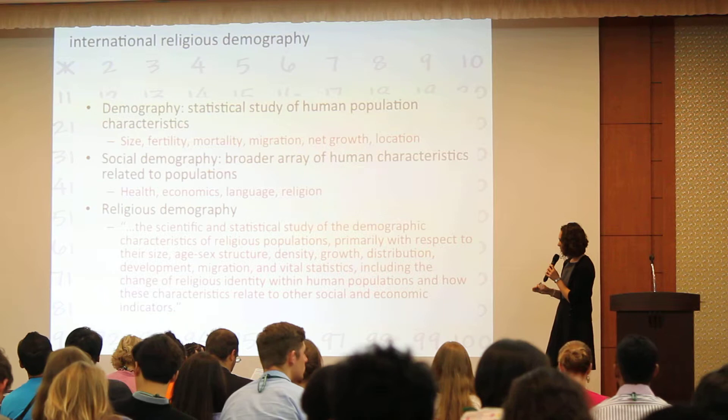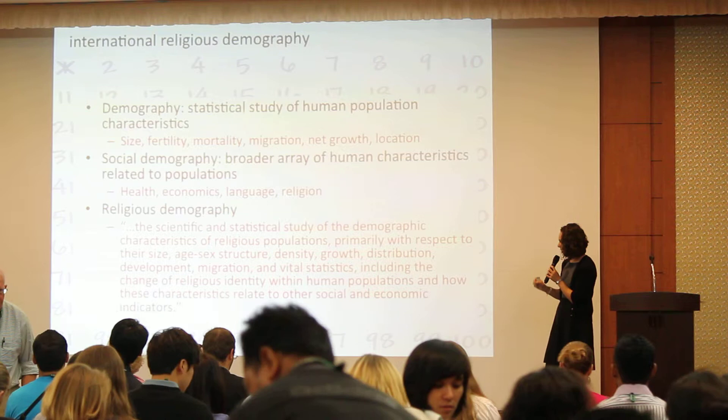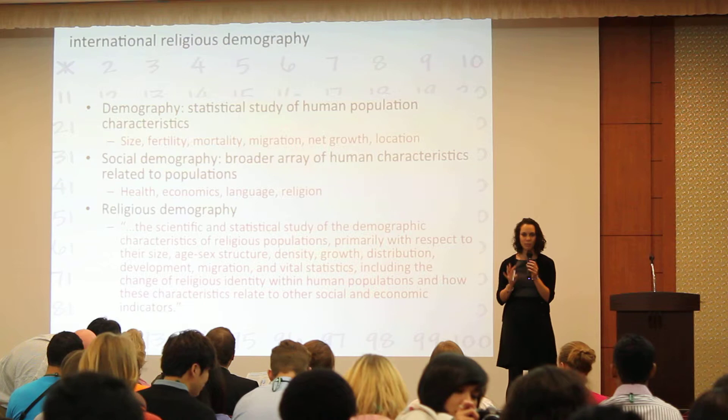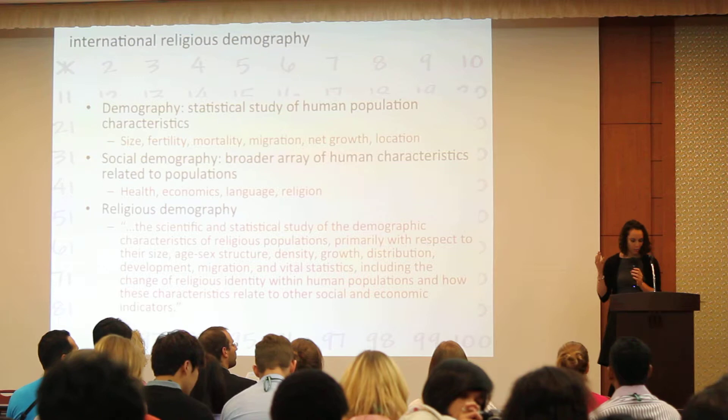Religious demography covers primarily size, age structure, density, growth, distribution, development, migration, and vital statistics — including the change of religious identity within human populations and how these characteristics relate to other social and economic indicators. In practical terms, I track people and what their religious affiliation is. That's pretty much it.